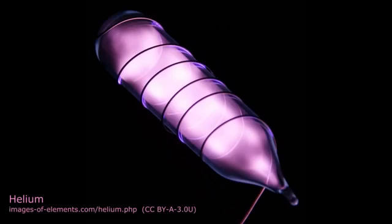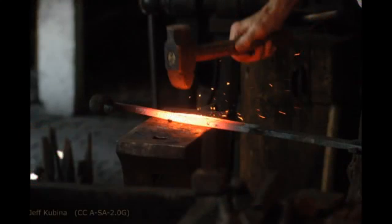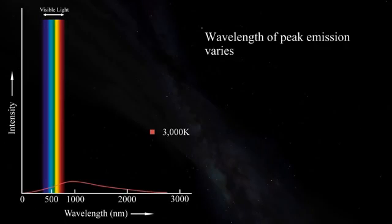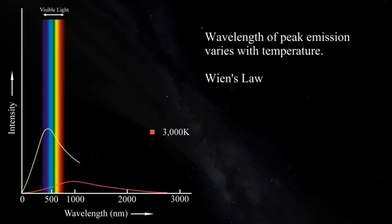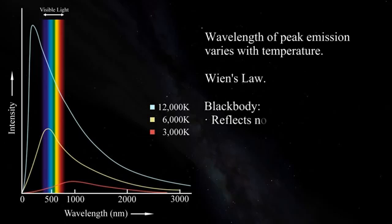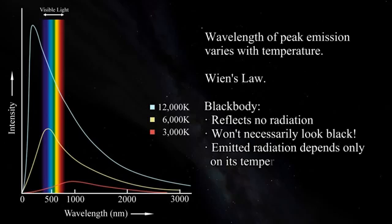An object at a given temperature emits electromagnetic radiation. A dense object emits across a broad range of frequencies. The hotter the object, the more light is emitted at all frequencies, so the object appears brighter. However, there is a wavelength of peak emission that also varies with temperature according to Wien's law, so the color of an object varies with its temperature. The curves shown represent those of an idealized object called a black body, which reflects none of the radiation that falls upon it and doesn't necessarily look black because it emits radiation entirely dependent on its temperature.